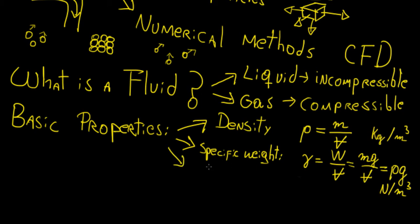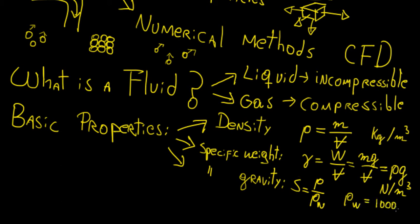We also have something called specific gravity, not to be confused with specific weight. Specific gravity is essentially the ratio of a fluid's density to the density of a standard fluid — usually water. So if we want to find the specific gravity of some fluid, we just compare it to the density of water, which under standard conditions is 1000 kilograms per meter cubed. Specific gravity is just a comparison of how dense a particular fluid is compared to water as the standard.